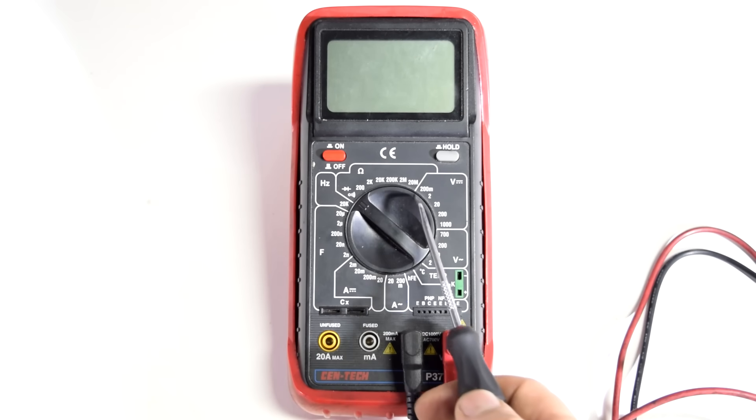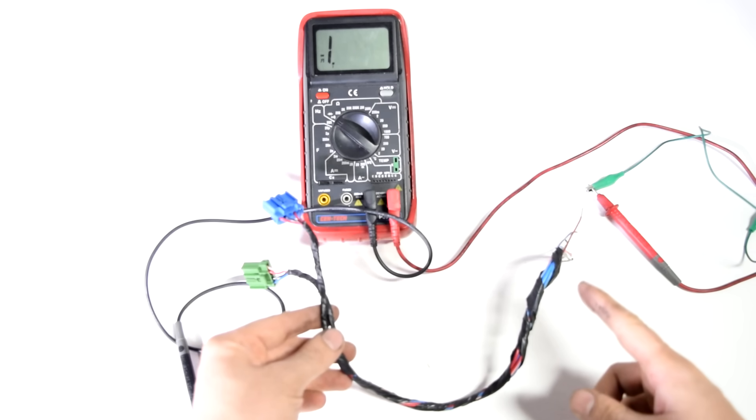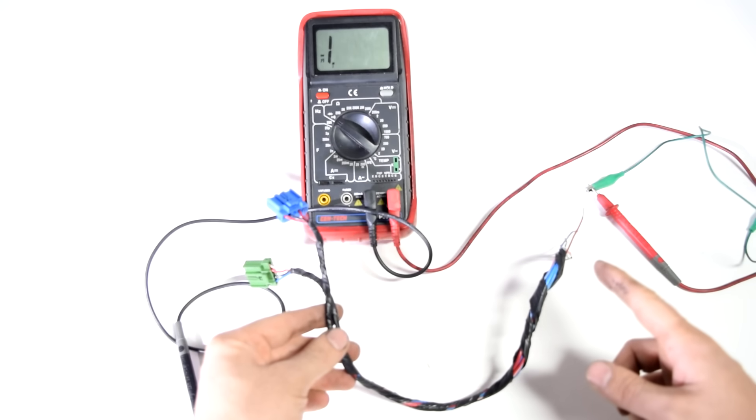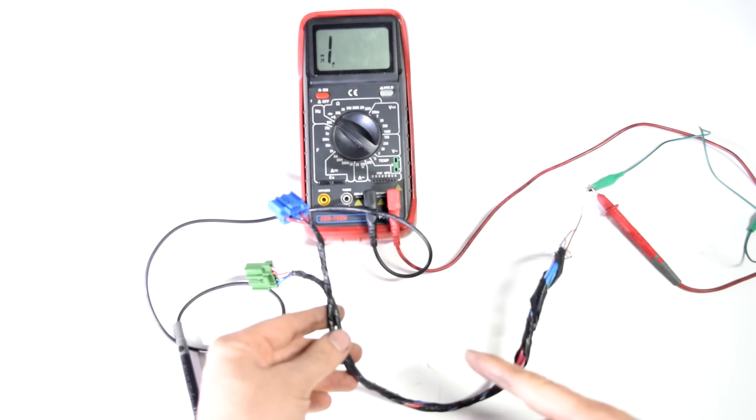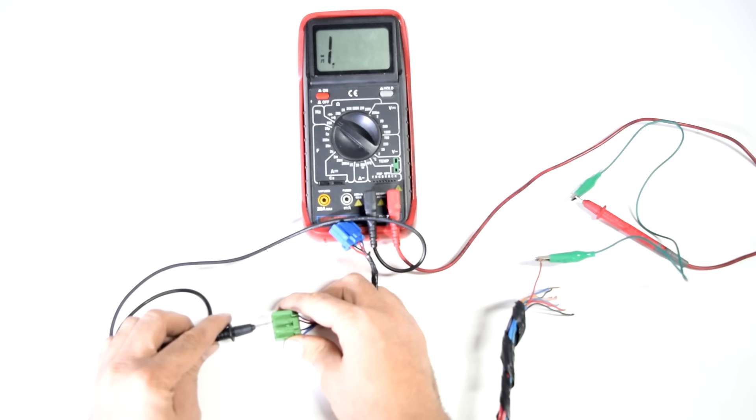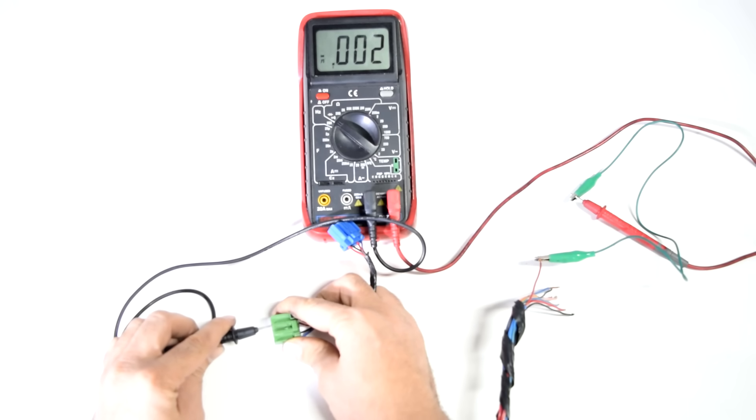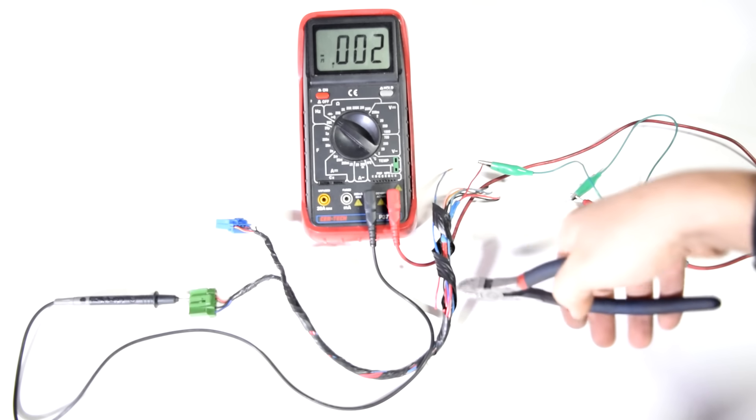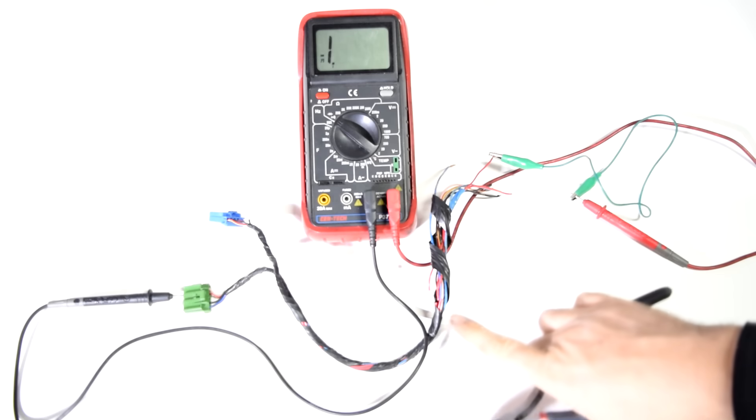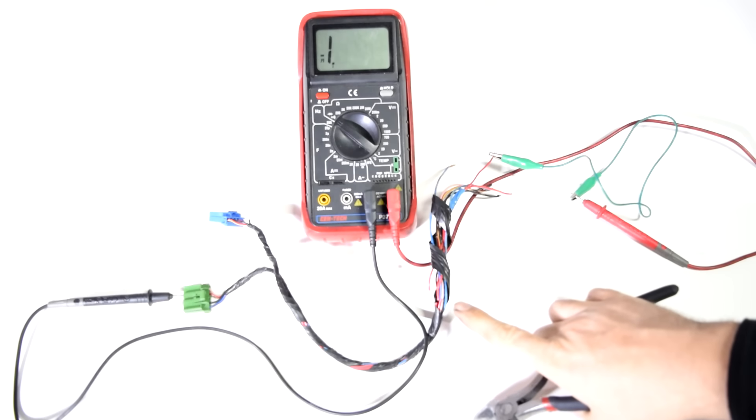So for continuity we set our dial here to this icon that sort of looks like a sound wave. And since we're still in the resistance setting our test leads stay in the same area. So for example if you wanted to make sure the wires that go to this connector are in good shape and that electricity or current can travel through them you attach one of your test leads to one end and then your other test lead to the corresponding pin on the connector. And if you hear that beep that means you got continuity. And if you do this and you don't hear a beep it means that you got a short somewhere in this wire or in other words in our case maybe a cut or a burnt wire.